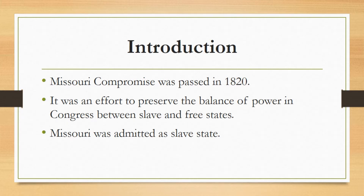In 1854, the Missouri Compromise was repealed by the Kansas-Nebraska Act. Three years later, the Missouri Compromise was declared unconstitutional by the Supreme Court in the Dred Scott decision, which ruled that Congress did not have the authority to prohibit slavery in the territories.